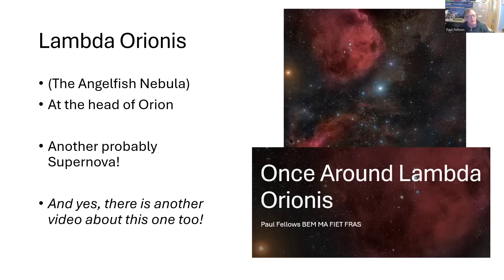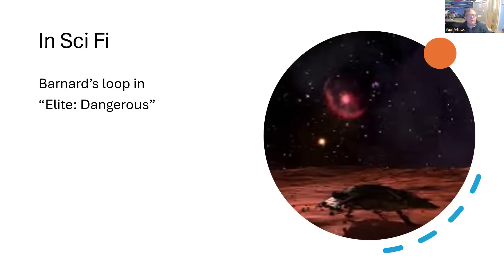And just finally to finish off about Barnard's loop, I do like to look for mentions of these things in sci-fi and this one's particularly favorite of mine. This is an image from Elite Dangerous, the elite computer game written by a friend of mine by Frontier, which is owned by David Braben, who I've known for nearly 40 years. And Barnard's loop is part of the Elite Dangerous game. So a plug for Elite there.